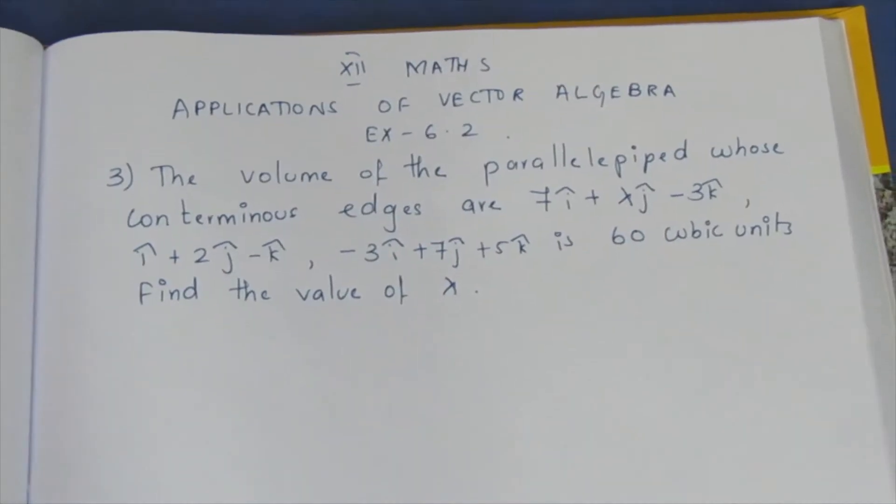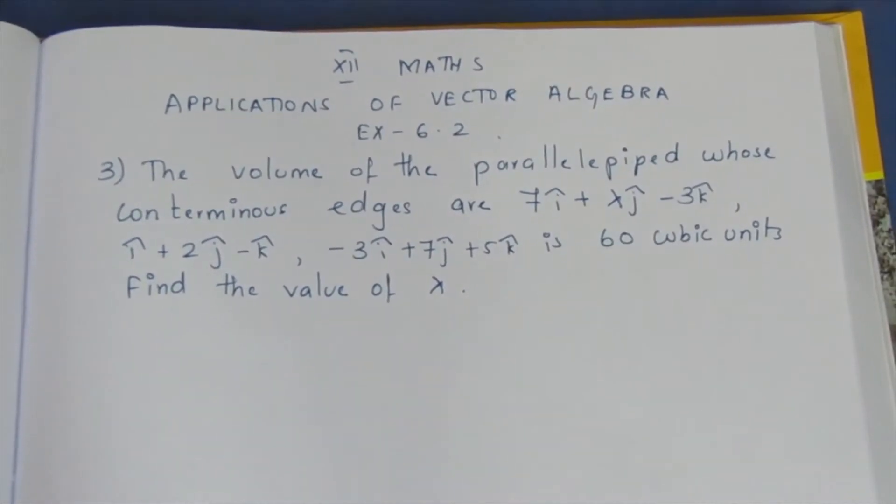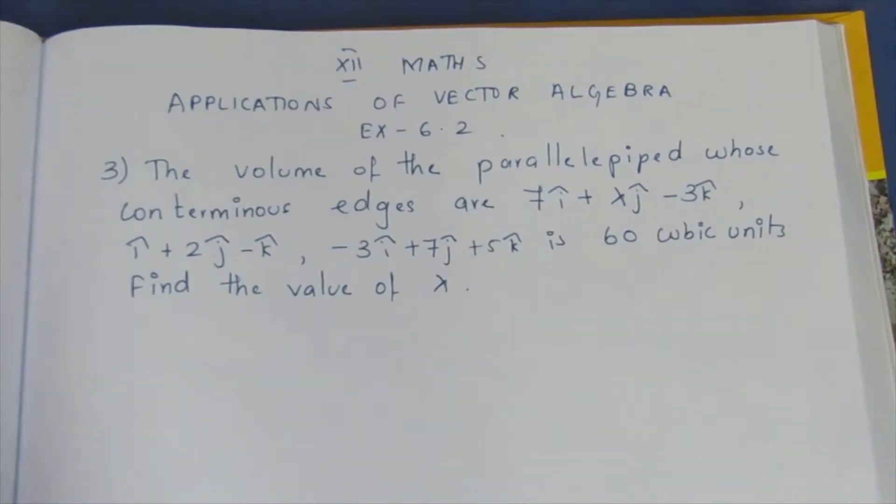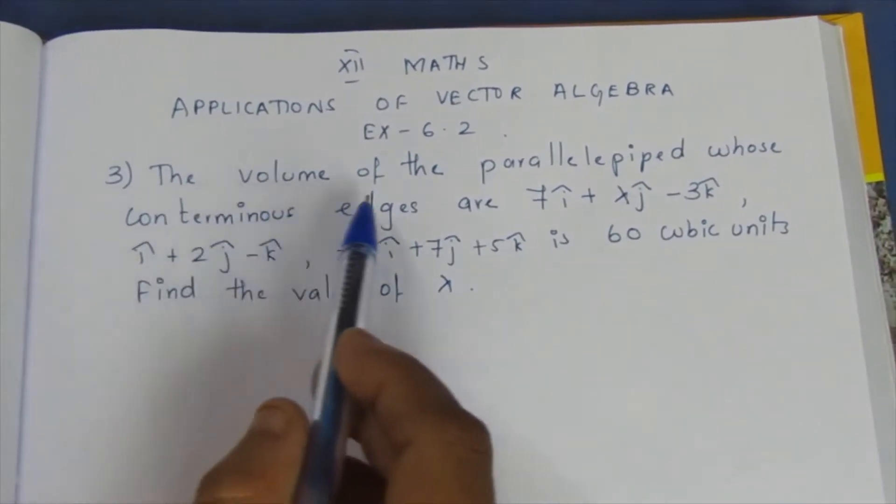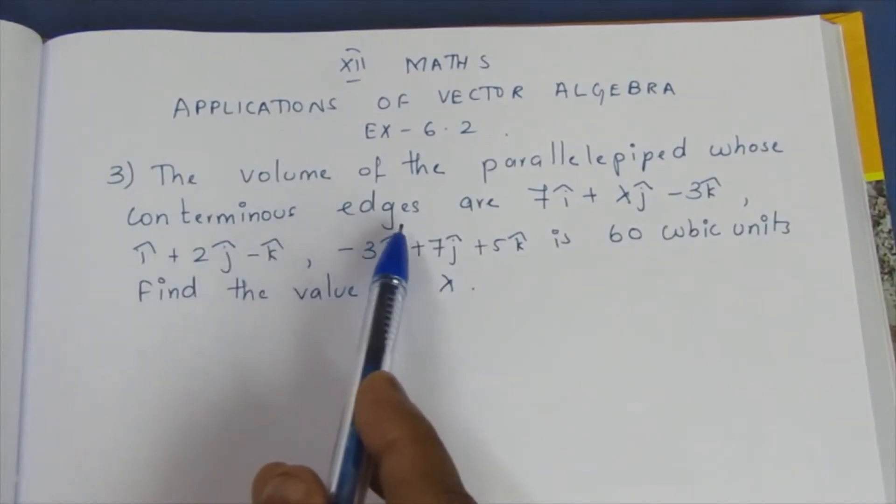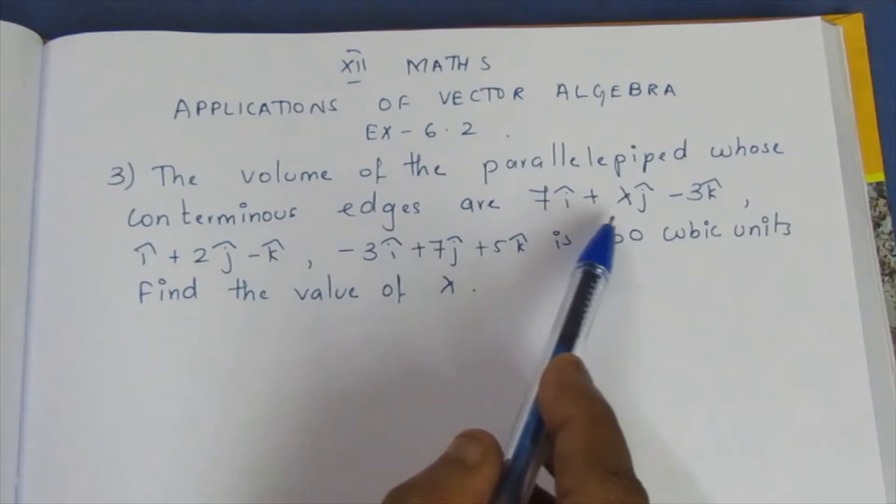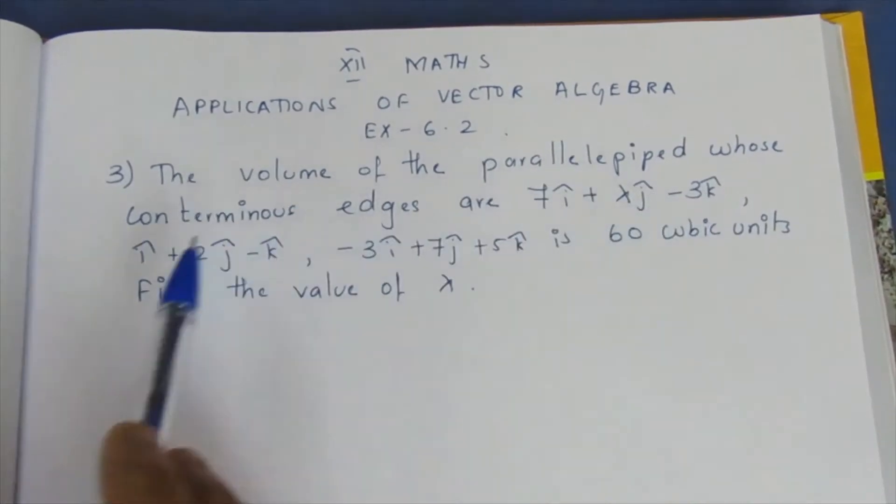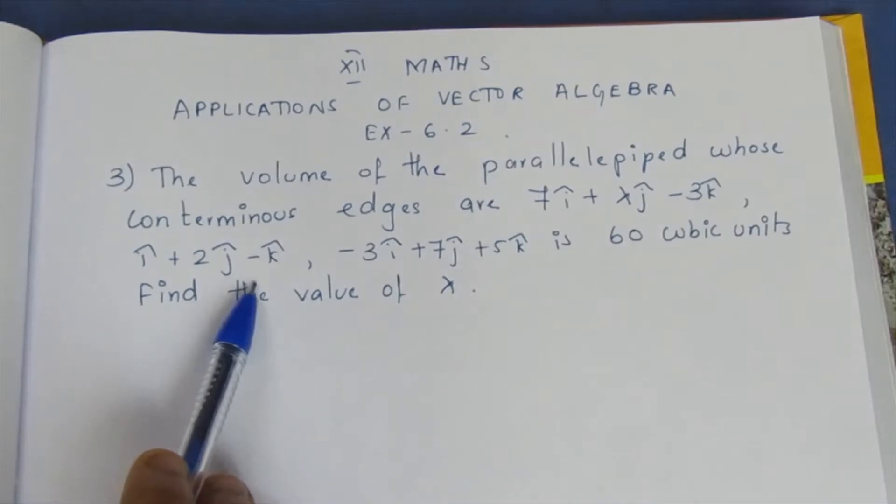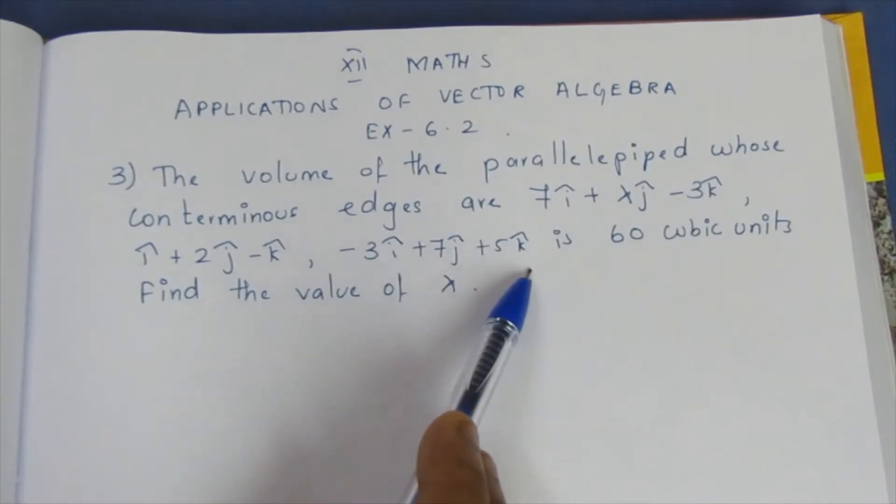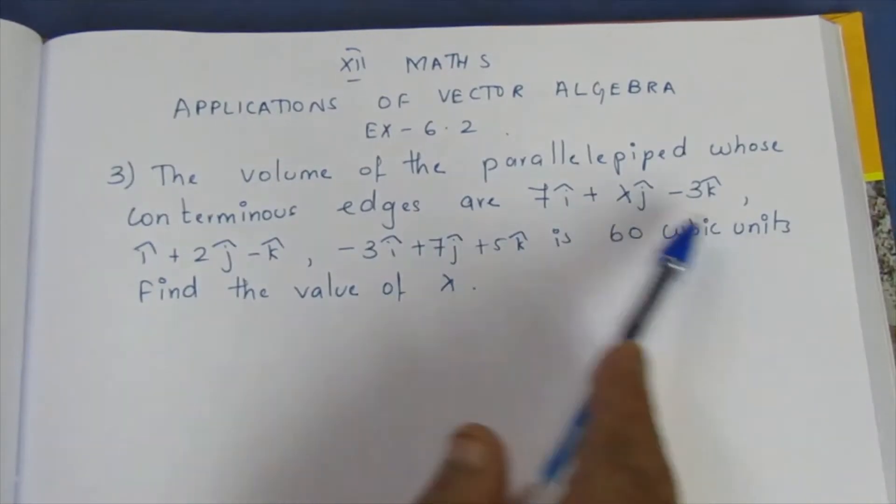Hello viewers, I am Aitli. In 12th Math applications of vector algebra, Exercise 6.2, third sum in the video. Question: The volume of the parallelepiped whose coterminous edges are 7i cap plus lambda j cap minus 3k cap, i cap plus 2j cap minus k cap, minus 3i cap plus 7j cap plus 5k cap is 60 cubic units.